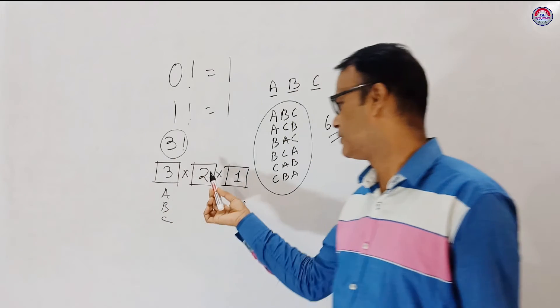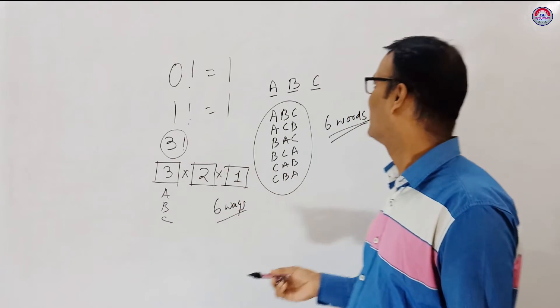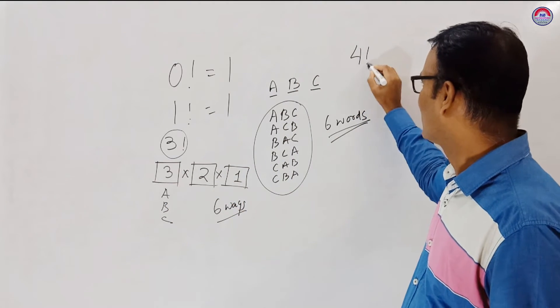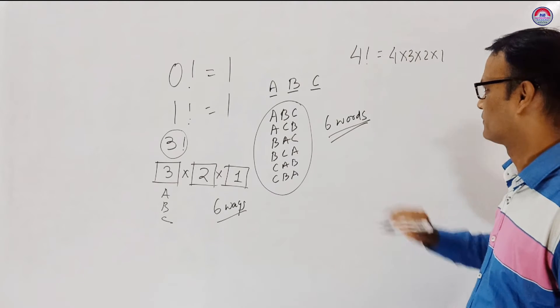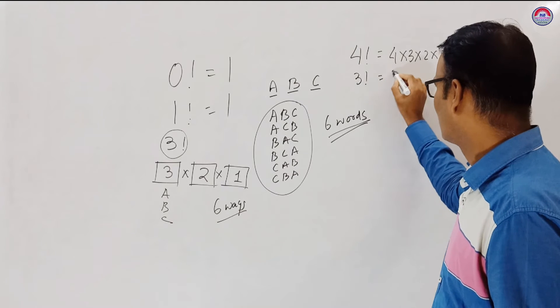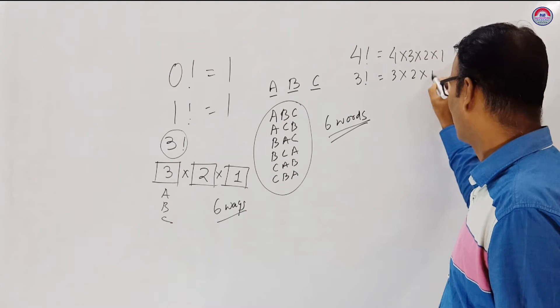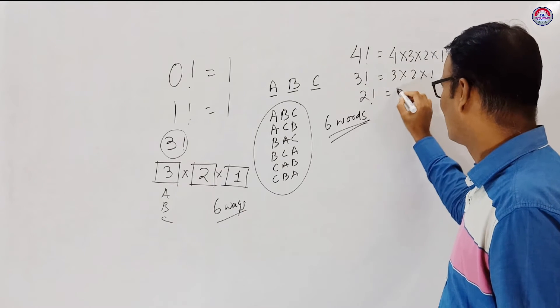So first place three ways, second two ways and third one. So total we can write six ways. So here, three factorial is equal to three into two into one. Similarly we can write four factorial is equal to four into three into two into one.